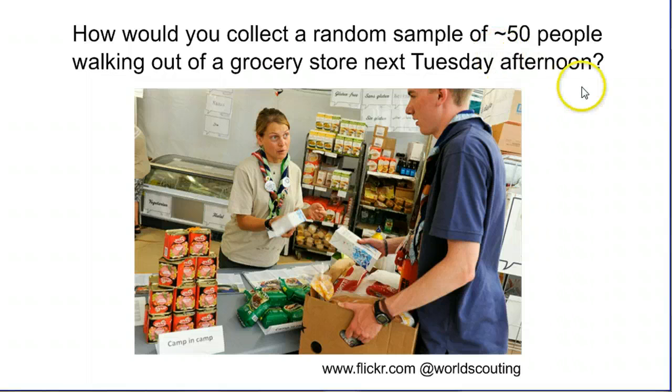How would you collect a random sample from roughly 50 people walking out of a grocery store next Tuesday afternoon? Usually when we have an SRS, we know all of the people in our population. We can put them in a hat or number them on a list. But people coming into a grocery store, we don't know who's going to show up. So for this case, we use systematic sampling.